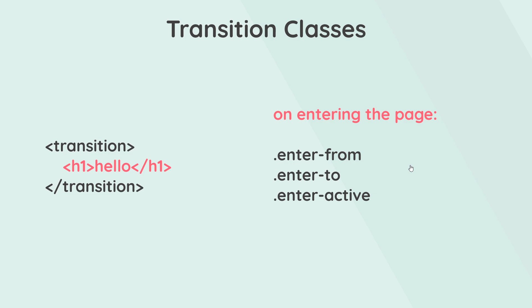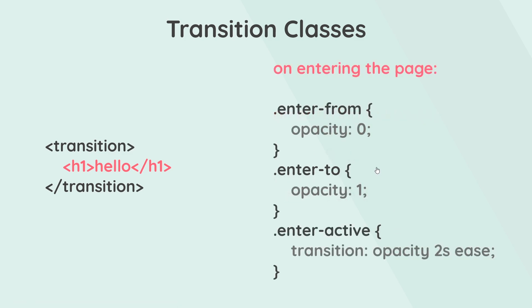Enter-from is a class applied to the element before it enters the browser — this is where we set the initial CSS state of the element. Enter-to is a class applied to the element as it enters the browser — this is where we set the final CSS state. Enter-active is a class applied while the element is transitioning from one state to another, and this is where we dictate how long the transition will take and any easing function.